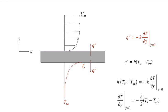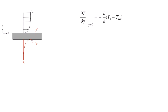We can solve for the temperature gradient from this expression, and now what I'd like to do is non-dimensionalize it. A common definition for non-dimensional temperature T* is the temperature anywhere in the flow minus the surface temperature, divided by the maximum temperature difference T infinity minus the surface temperature.